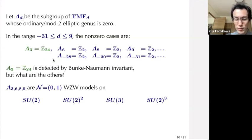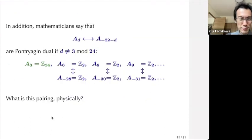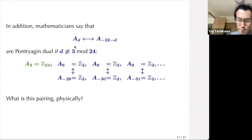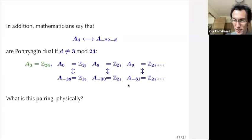But the negative entries are more complicated. What are A₋₂₈, A₋₃₀, and A₋₃₁? In addition, mathematicians say there is a Pontryagin duality between A_d and A_{−22−d} when d ≠ 3 mod 24. So there is no Pontryagin dual pair for A₃. But for the others: A₆ is paired with A₋₂₈, A₈ is paired with A₋₃₀, and A₉ is paired with A₋₃₁. What is this pairing, physically speaking?